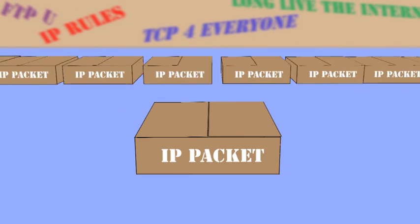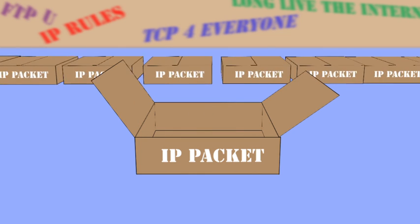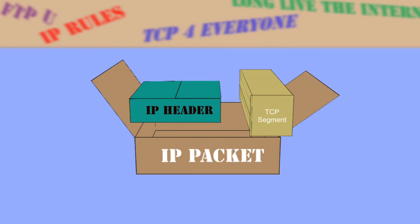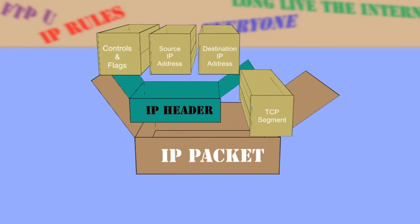The two main parts are the IP header and then the TCP segment. The IP header consists of controls and flags, as well as the source and destination IP addresses, while the TCP segment consists of the actual data along with other information, which will be explained later.